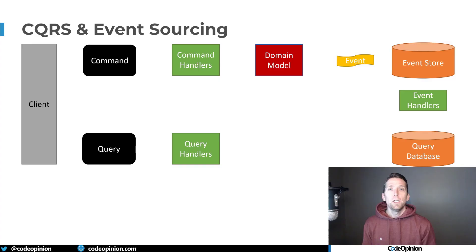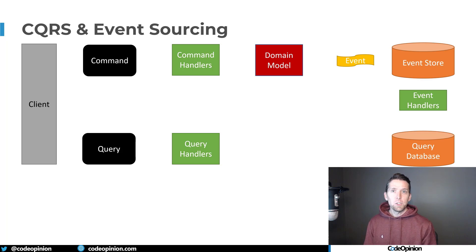This diagram is often shown to describe CQRS and event sourcing, but people often don't really distinguish what part is what. There are actually three things going on here: CQRS, event sourcing, and projections.